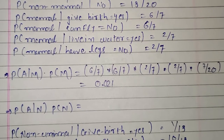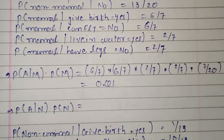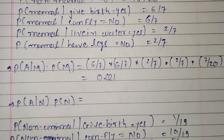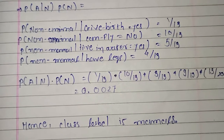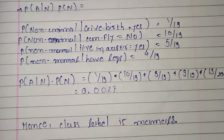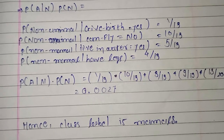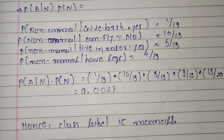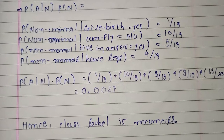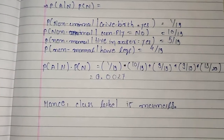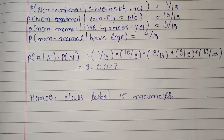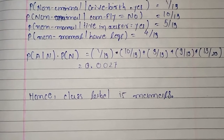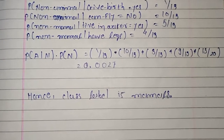Here we calculate the probability of each attribute given mammal yes. For that, the probabilities are 6 by 7 into 6 by 7 into 2 by 7 into 2 by 7 into 7 by 20. Then we calculate for non-mammal. For non-mammal and give birth equal to yes, that probability is 1 by 13. For non-mammal and can fly equal to no, that probability is 10 by 13. For non-mammal and live in water equal to yes, that probability is 5 by 13. And for non-mammal and have legs equal to no, that probability is 4 by 13. Multiplying each: 1 by 13 into 10 by 13 into 3 by 13 into 9 by 13 into 13 by 20 equals 0.0027.